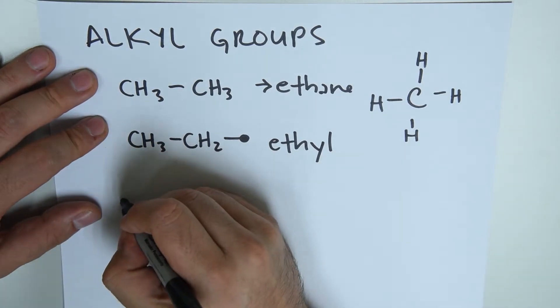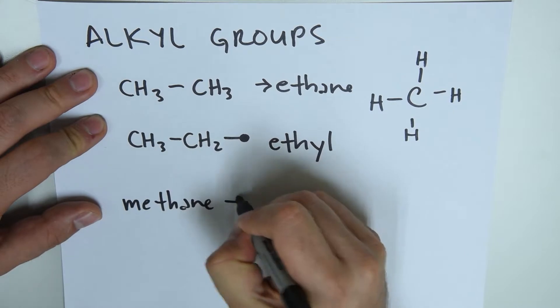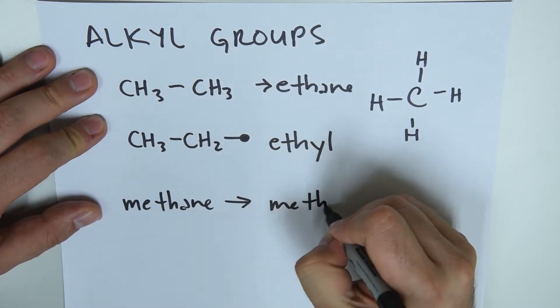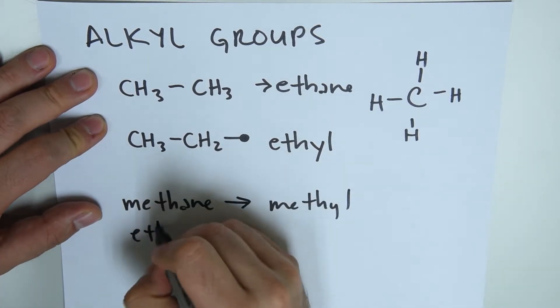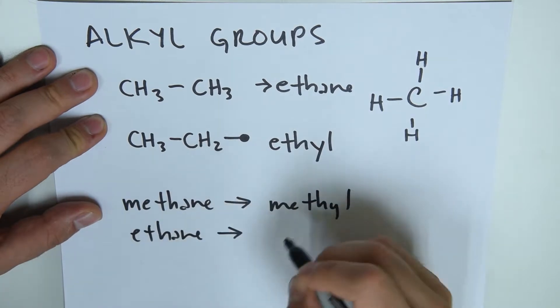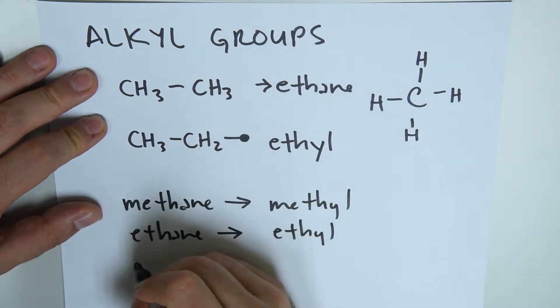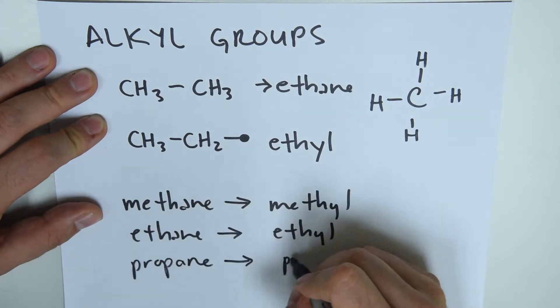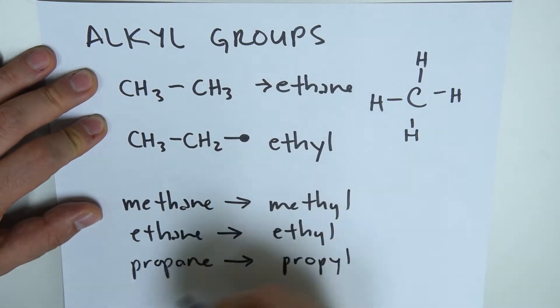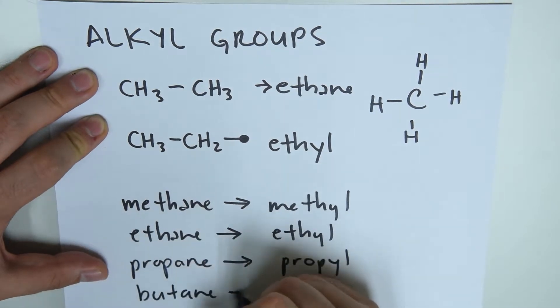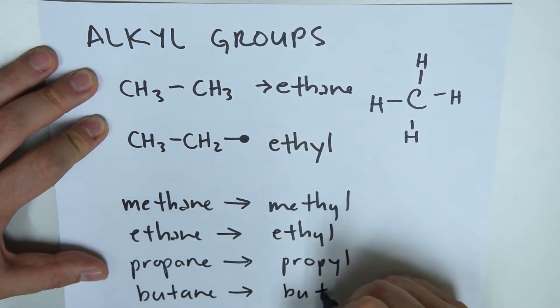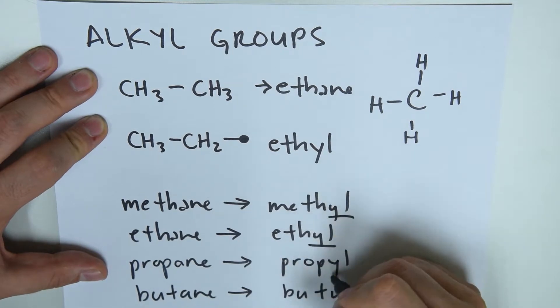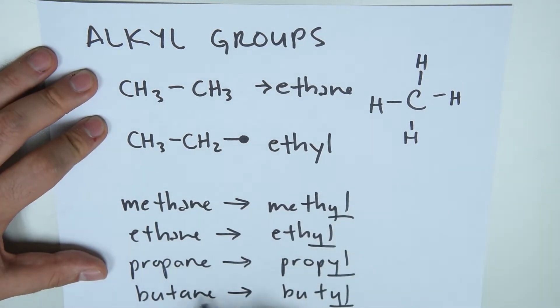So from methane, we get methyl. From ethane, we get ethyl. From propane, we get propyl. And from butane, we get butyl, all with their -yl ending, meaning that it's a four carbon chain arranged in a different way, but it's missing one hydrogen and it wants to bond.